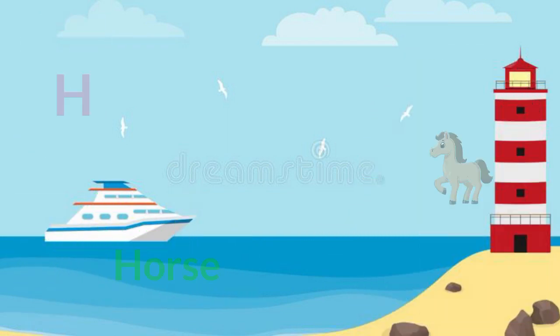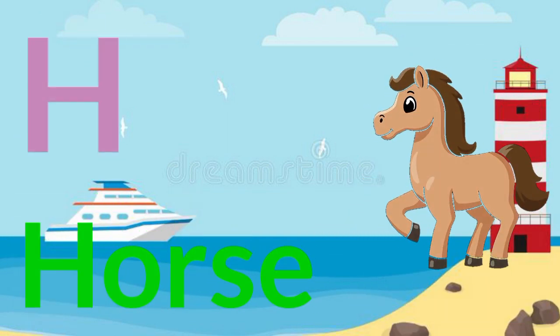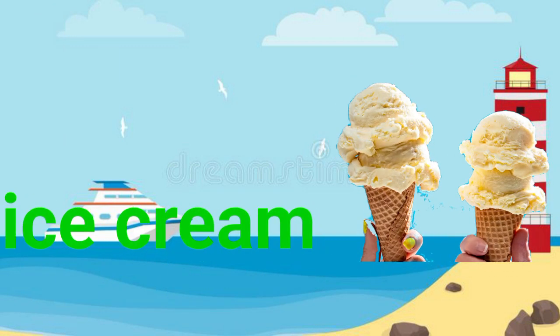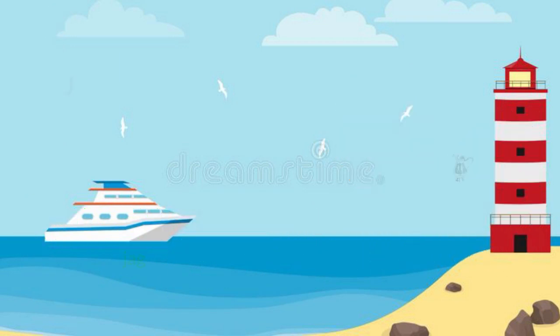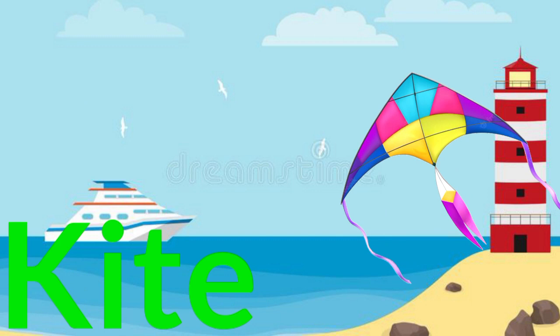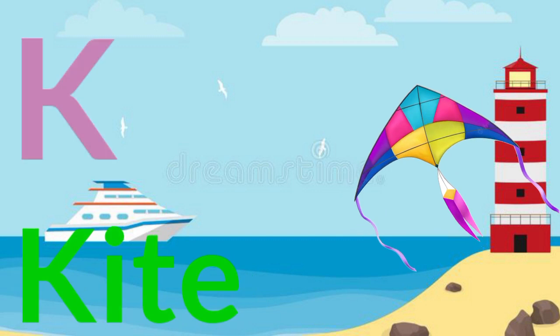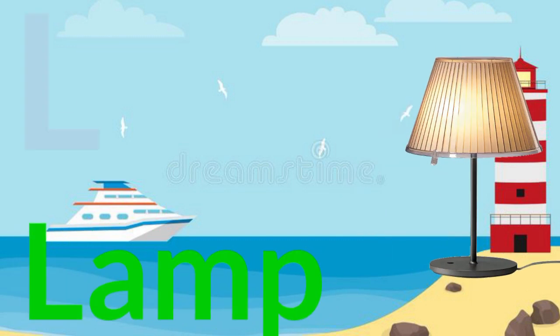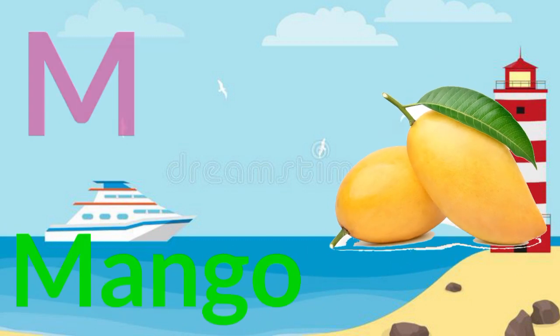G for gulls, H for horse, I for ice cream, J for jug, K for kite, L for lamp.